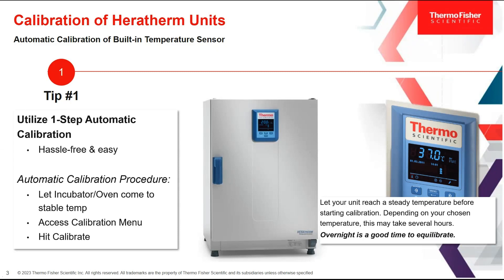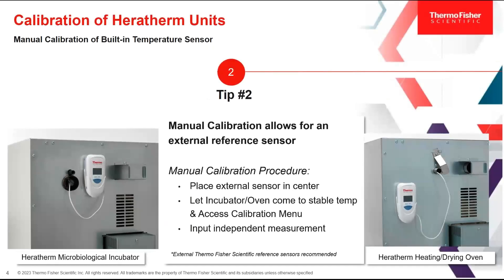Tip number one: utilize that automatic one-step calibration. This brings us to the next idea of calibration. If you have multiple units — and customers tell us this all the time — they want to ensure that each individual unit is calibrated to the same reference. That's done by using a process very similar to manual calibration, except we also integrate an external reference sensor. We absolutely recommend the Thermo Fisher Scientific reference sensor, and a great option is the SmartView Pro sensor that we're going to look at during the demo. All you need to do before your equilibration step is place that sensor in the center of the unit, which calibrates to the air temperature.